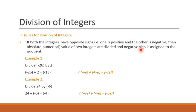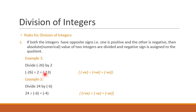Let's see with the help of few examples. Divide minus 26 by 2. Here one integer is negative and other is positive. So divide the absolute value: 26 divided by 2 gives me 13. And since the signs are opposite, the quotient will be negative. So the answer is minus 13. A negative number divided by a positive gives me a negative number.